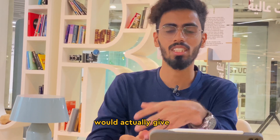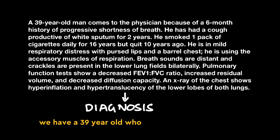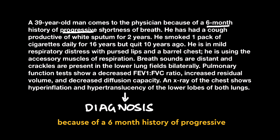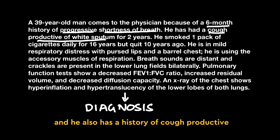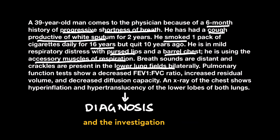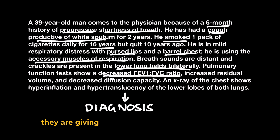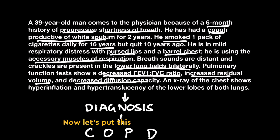Let's see if ChatGPT could actually give us a diagnosis. We have a 39-year-old who has come to the physician because of a 6-month history of progressive shortness of breath — dyspnea — and he also has a history of productive cough with sputum. He is a smoker of 16 years. All of these findings from the examination and investigations are giving us a diagnosis of chronic obstructive pulmonary disease. Now let's put this question into ChatGPT and see if it gives the diagnosis accurately.